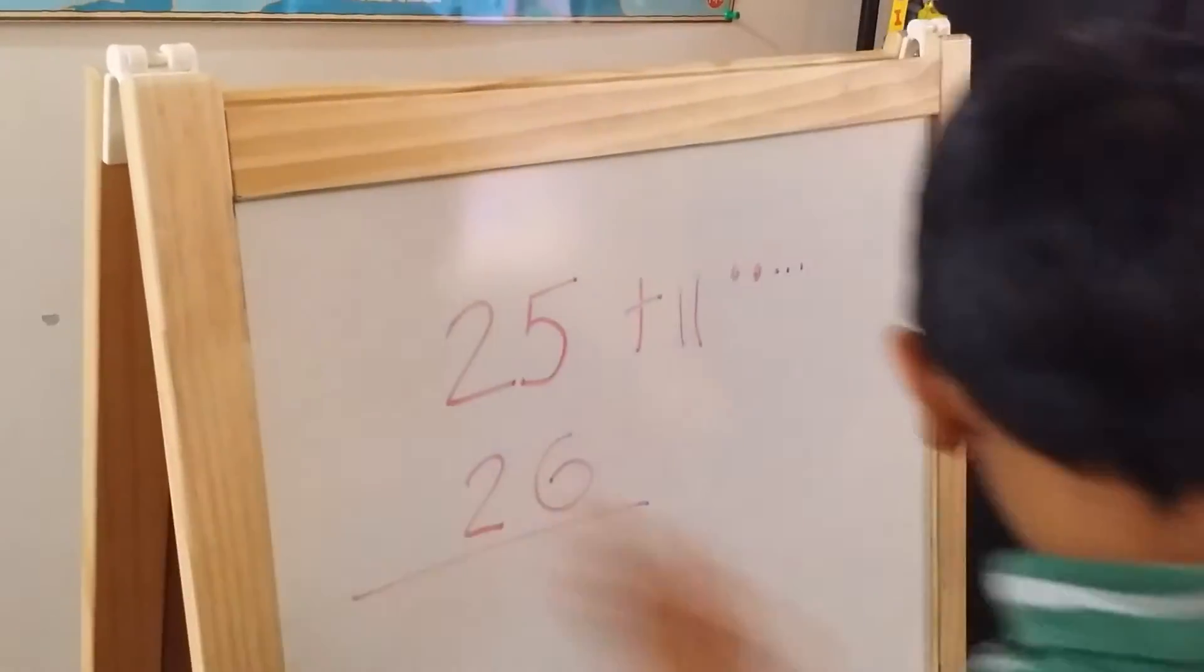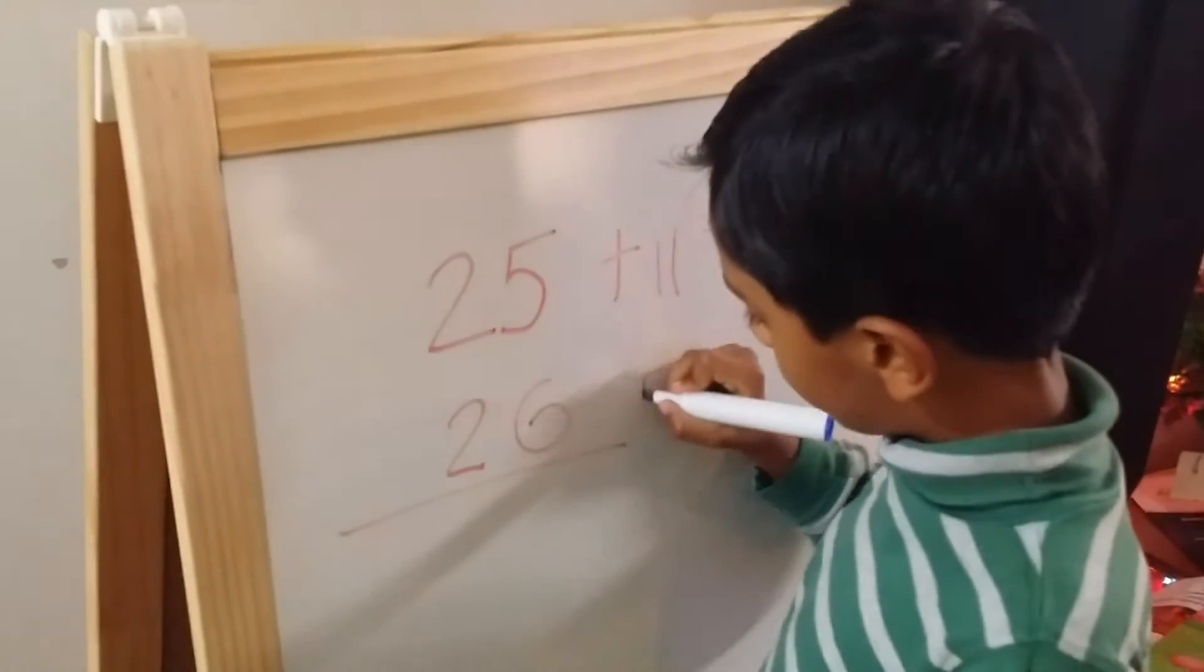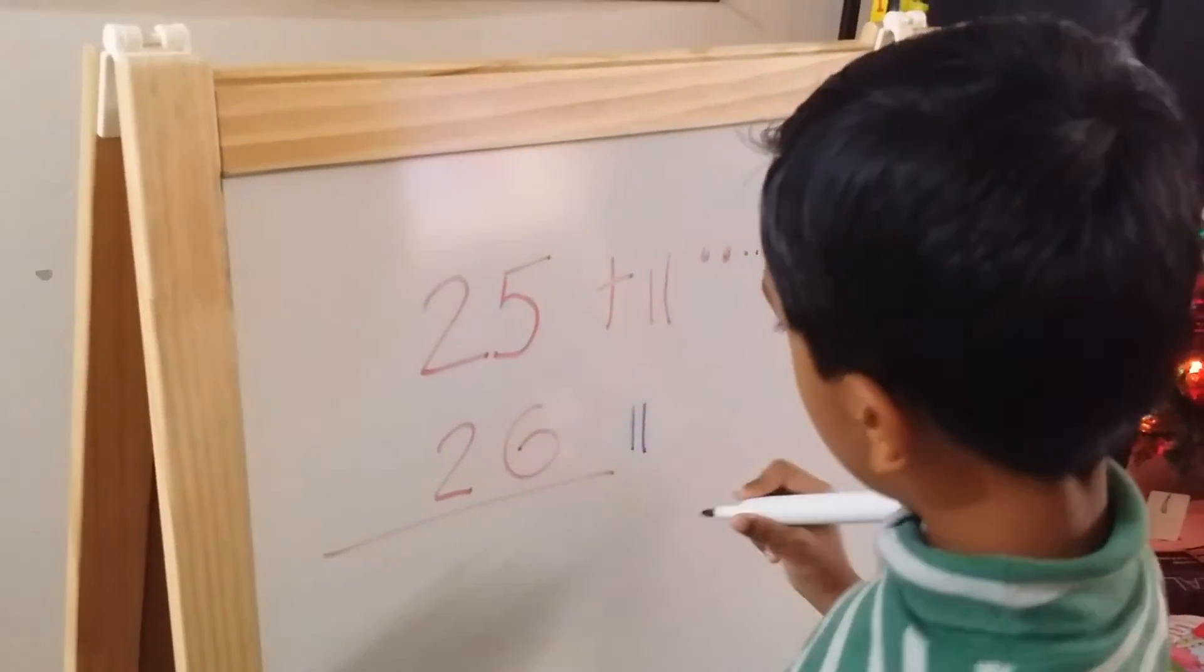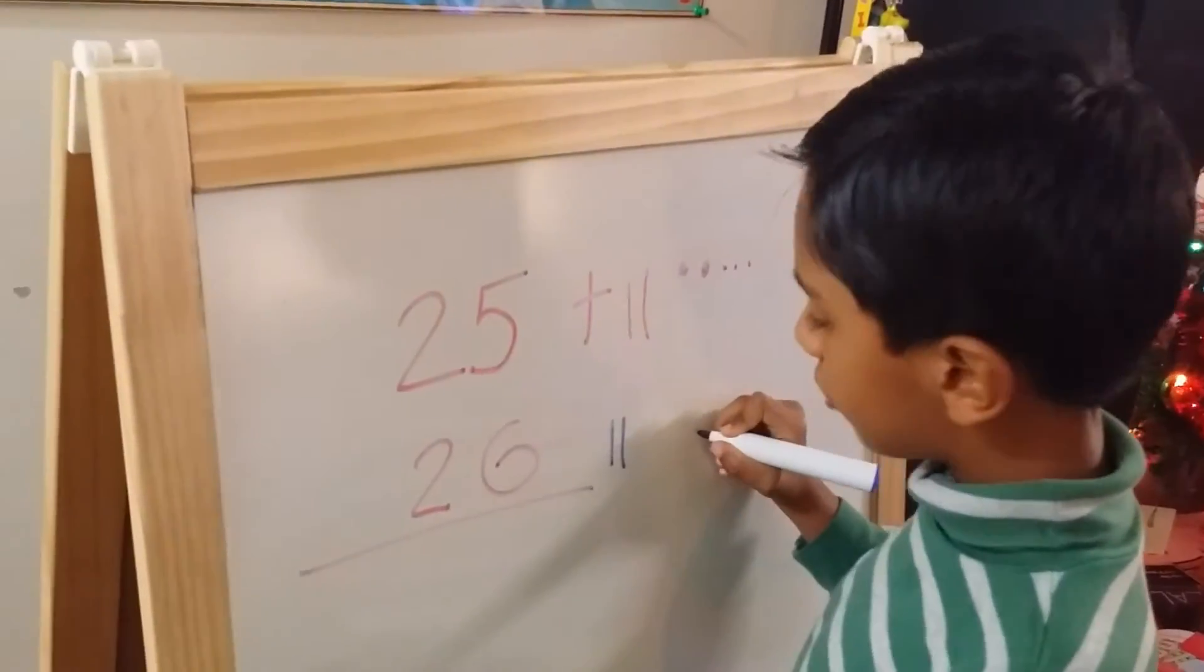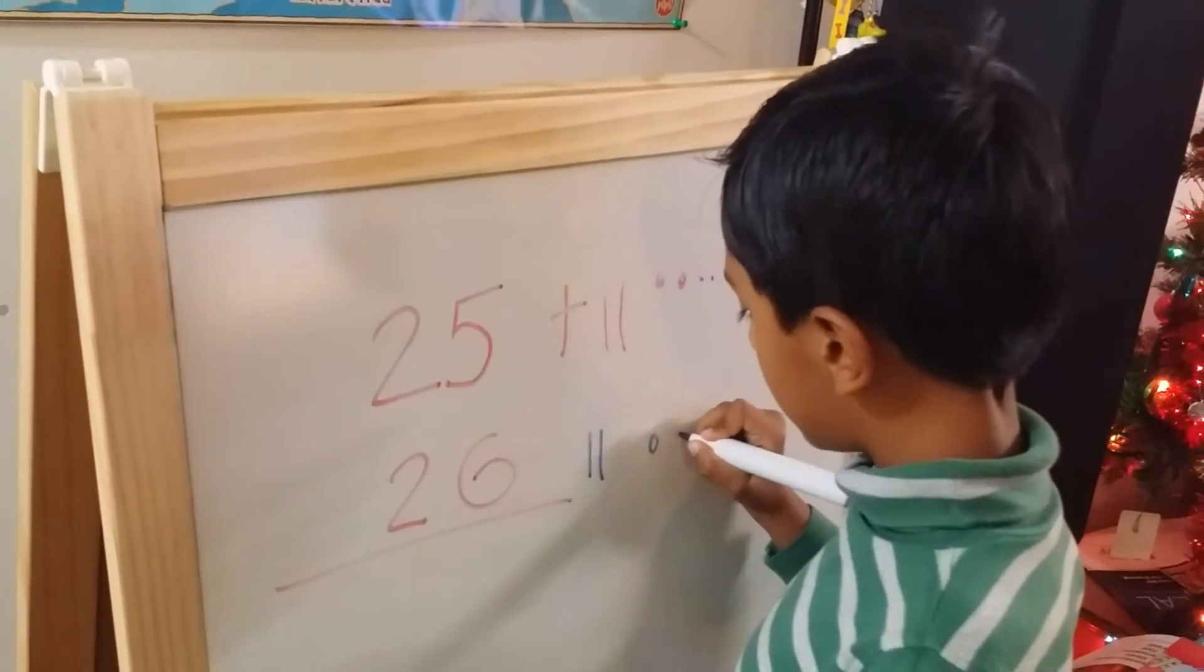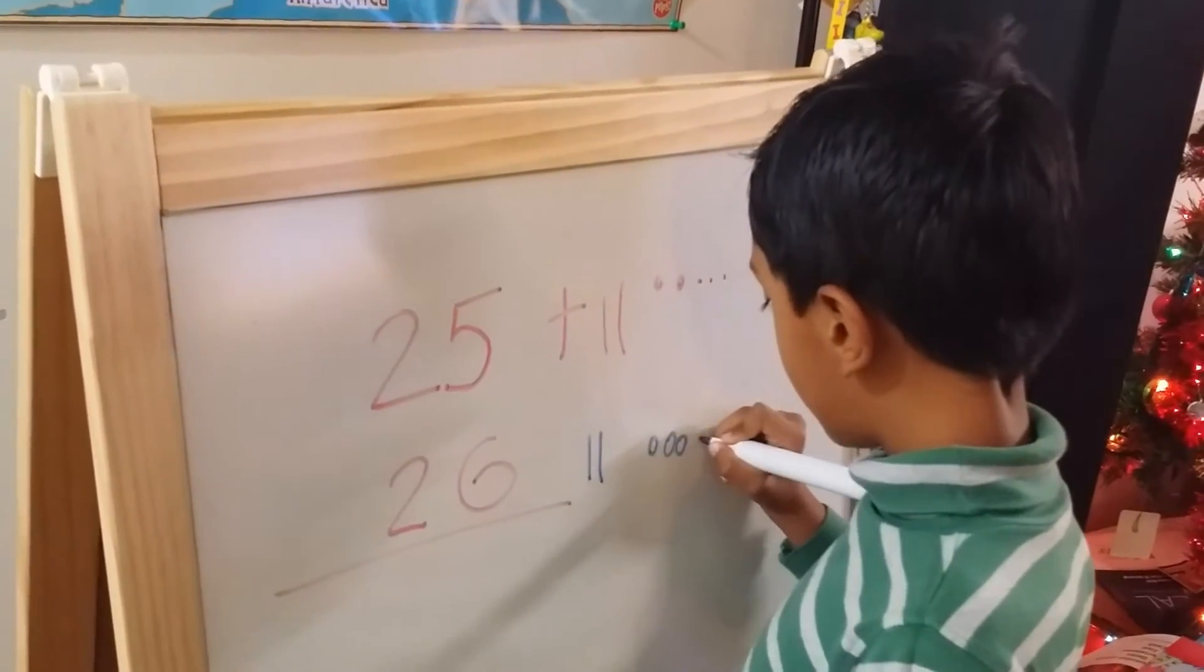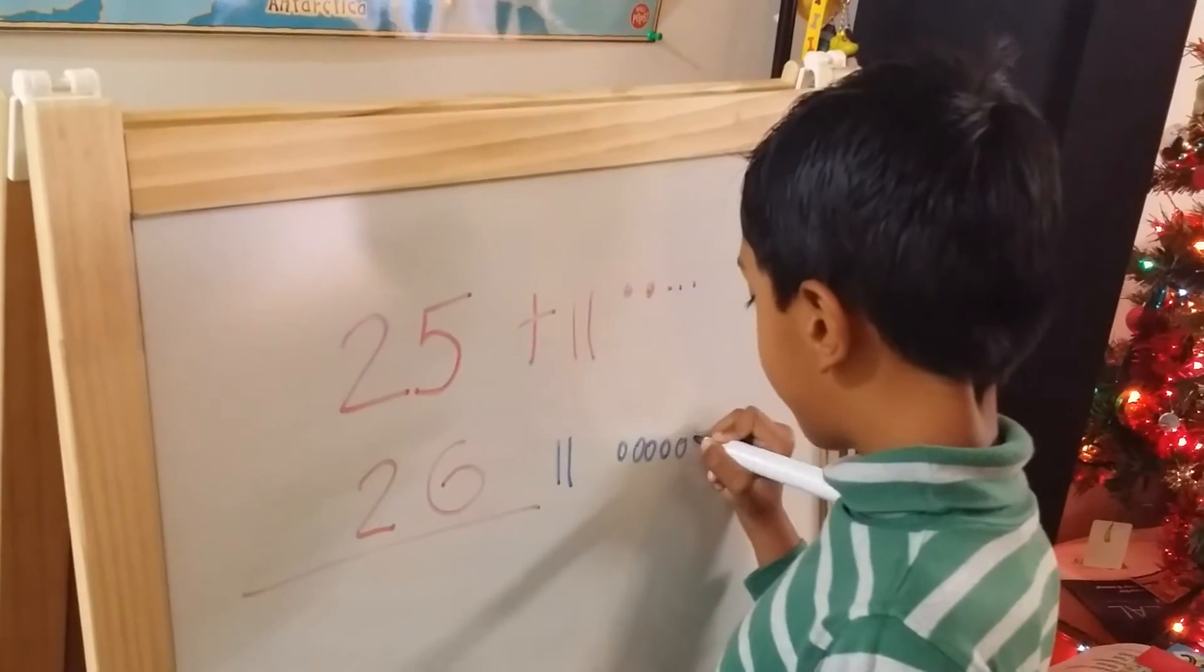This is fantastic. Draw two tens. And we have to draw six ones. One, two, three, four, five, six.